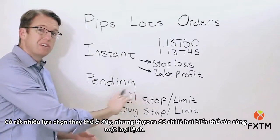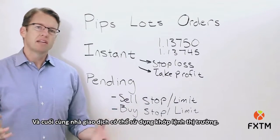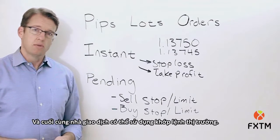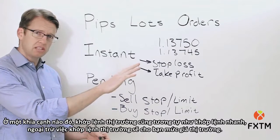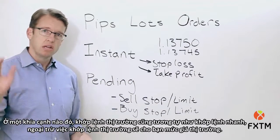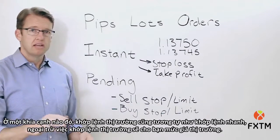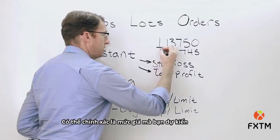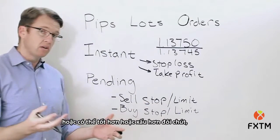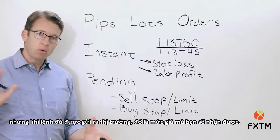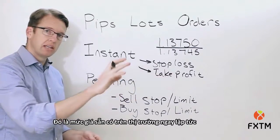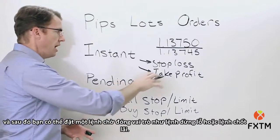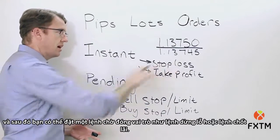Finally, there is market execution. Market execution is similar to instant execution in that you get the current market price, but unlike instant execution, whatever price is available at the market the moment your order is sent is the price you receive — it could be exactly as planned, slightly better, or slightly worse. After entering via market execution you can then go in and place pending orders to act as a stop loss or take profit level.